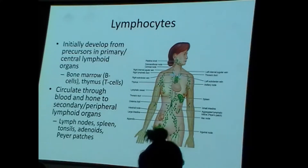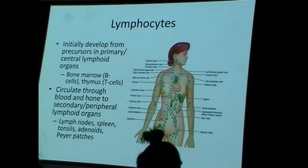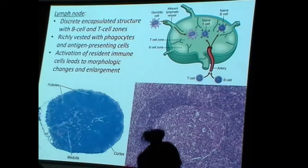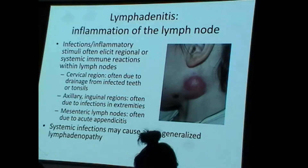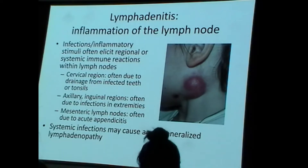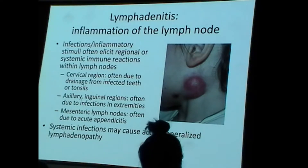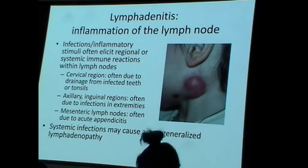Lymphocytes originally arise from the bone marrow and are educated there over time — that's the basis for B cells and T cells. We've also learned about lymph nodes. Probably the most clinically encountered condition of lymph nodes is lymphadenitis, which simply means inflammation of the lymph nodes. Lymphadenitis is common — you will identify it in maybe 15 to 25 percent of your patients.